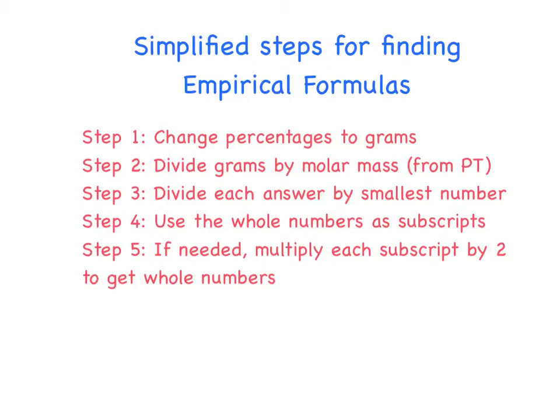So these are brief steps for finding empirical formulas. Usually you'll be given percentages of each element in a compound. We're going to be going through them step by step. First of all, we're going to change that percentage to grams. Then we're going to divide the grams by the molar mass from the periodic table. We're going to divide each answer by the smallest number to get the ratio of them. Use the whole numbers as the subscripts, and if we're going to need it, we're going to multiply each subscript by 2 to get our whole numbers.